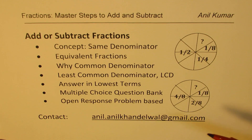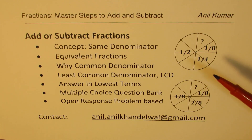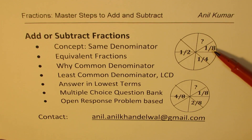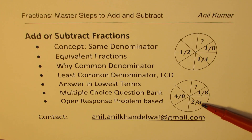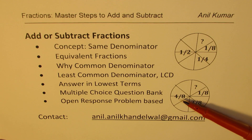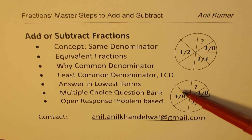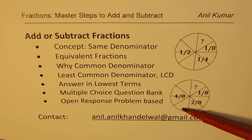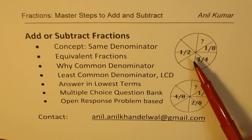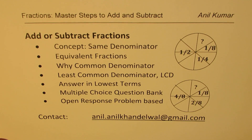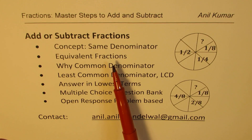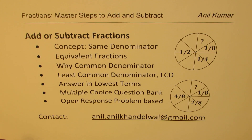Equivalent fractions are the same fractions written with different numerators and denominators. For example, one-half could be written as four over eight. The other circle I have drawn here shows the same thing with different equivalent fractions. One over four, multiplying both by two, gives two over eight — they are equal. Half is the same as four over eight. One-fourth is the same as having two slices of one-eighth each.